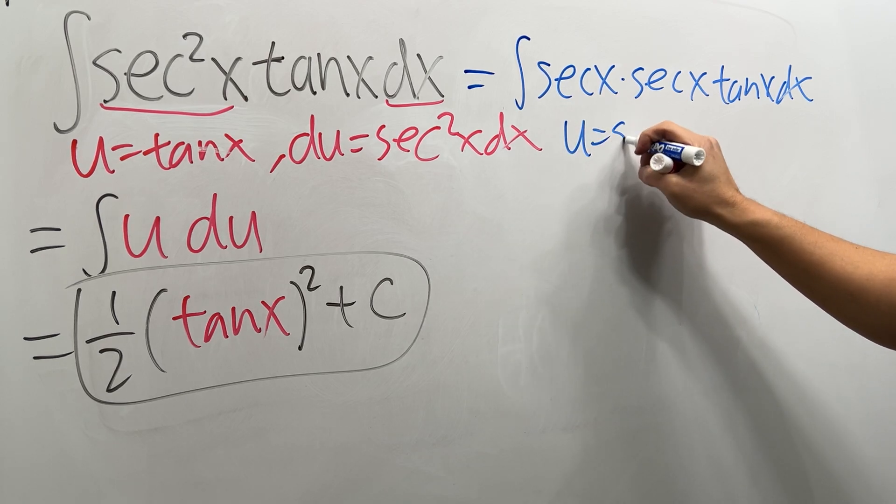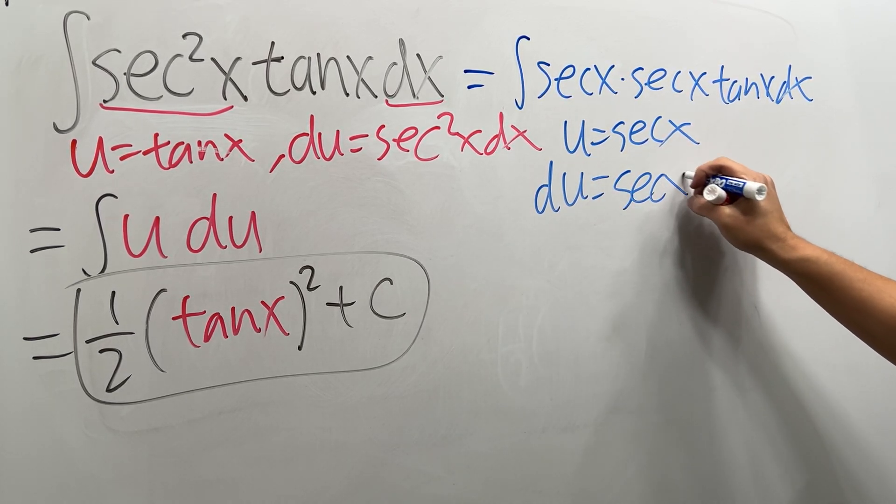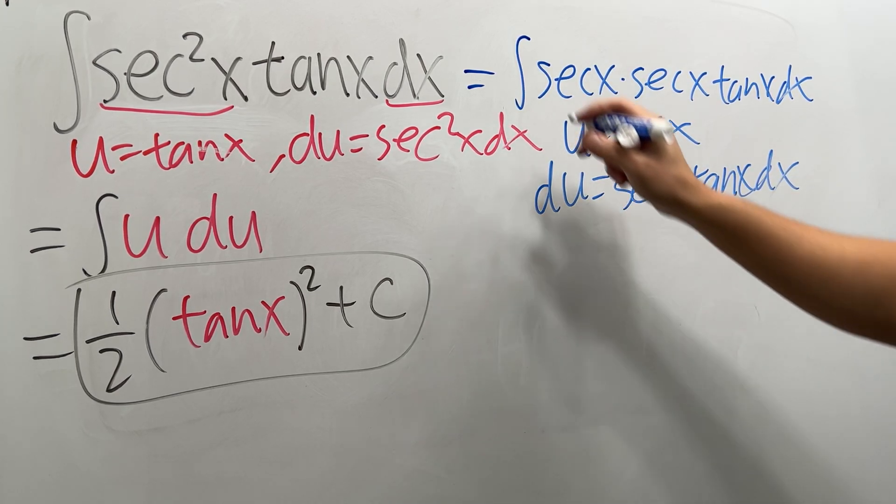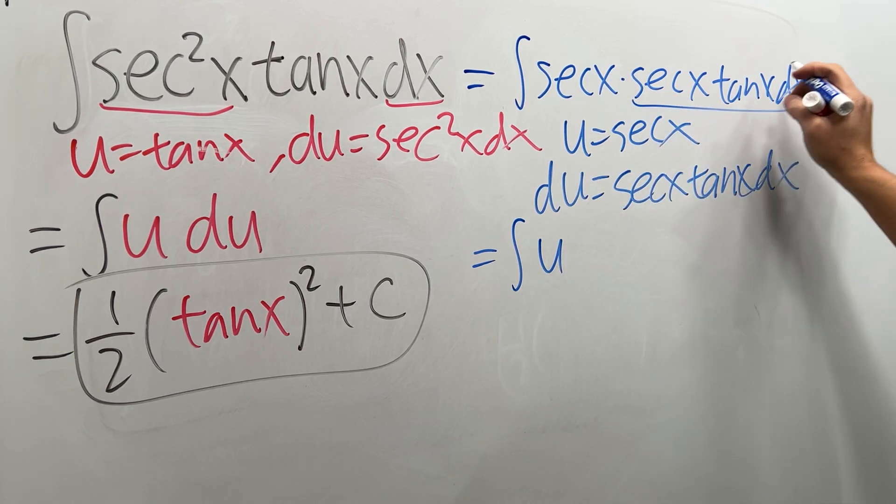let's take that u equal to secant x, and you see that du will just be the derivative, which is secant x times tangent x times dx. Well, in this case, you're going to see that the first secant is our u, and then the rest right here is our du.